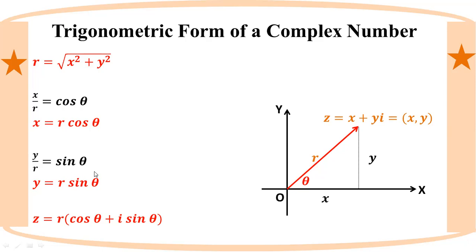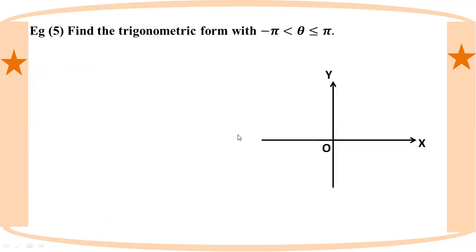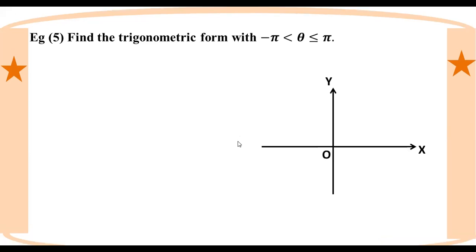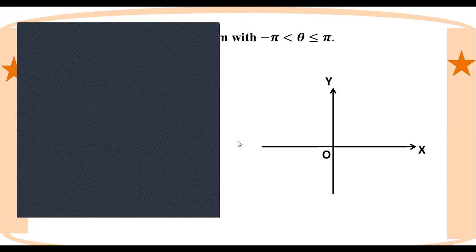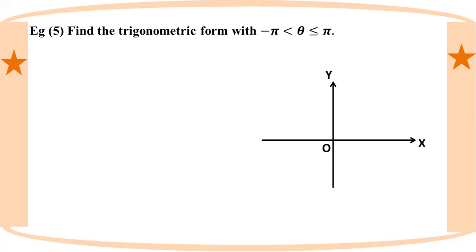The trigonometric form of a complex number is Z equals R into cosine theta plus i sine theta. At the bottom, it is R into cos theta plus i sin theta.